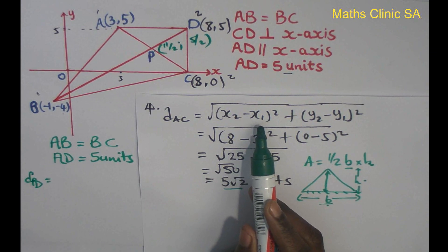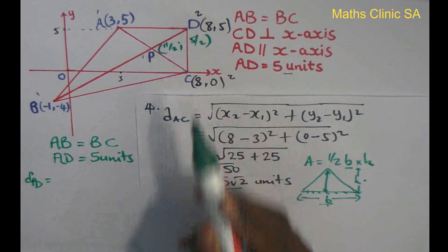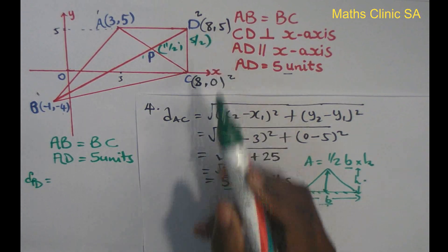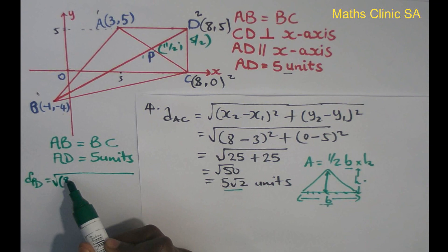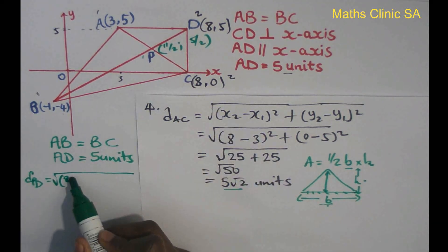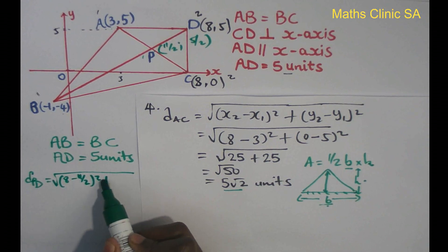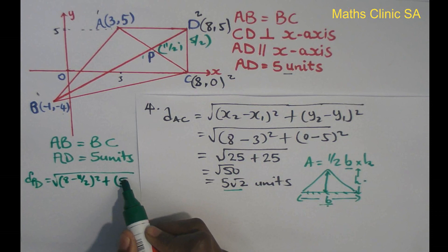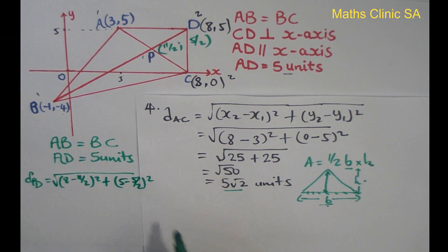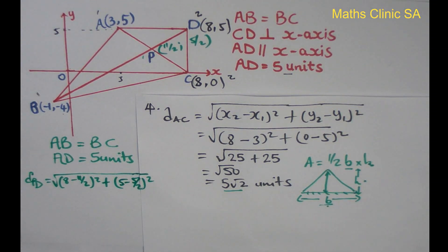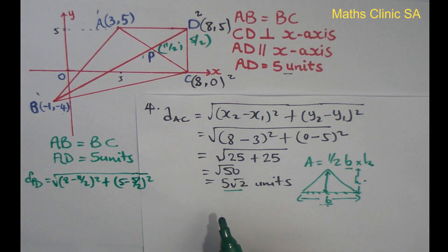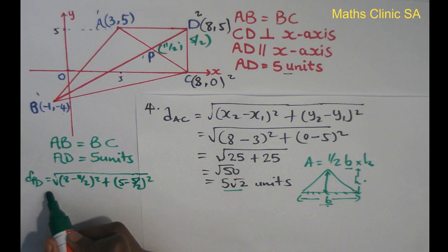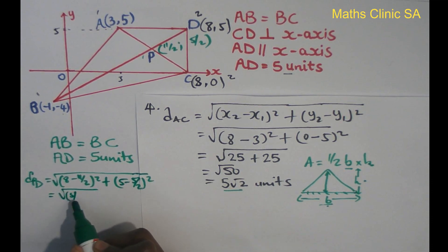Substituting into the distance formula: starting from point number 1, going to point number 2, PD. So x2 equals 8, x1 equals 11 over 2, giving 8 minus 11 over 2 which equals 16 over 2 minus 11 over 2 equals 5 over 2. So 5 over 2 squared, we have 5 over 2 squared.